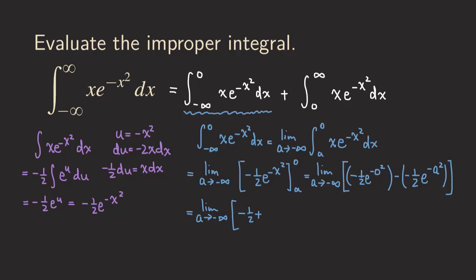Taking the limit as a goes to negative infinity: since a is squared, the exponent a² approaches positive infinity, so the denominator e^{a²} approaches infinity and the fraction 1/(2e^{a²}) approaches zero. So the answer is −1/2. This first integral is convergent.